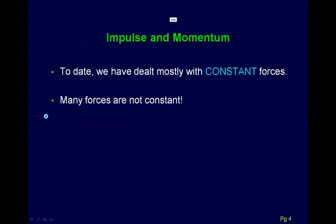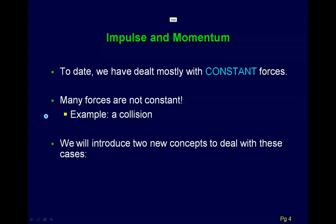And the first we're going to look at is impulse and momentum. So many forces are not constant. For example, a collision - in a collision between two objects, the force is generally not constant. And so right now we're going to look at two different concepts, impulse and then the conservation of linear momentum.